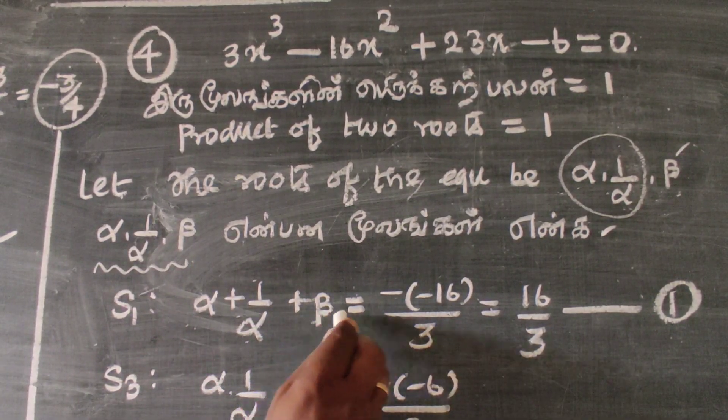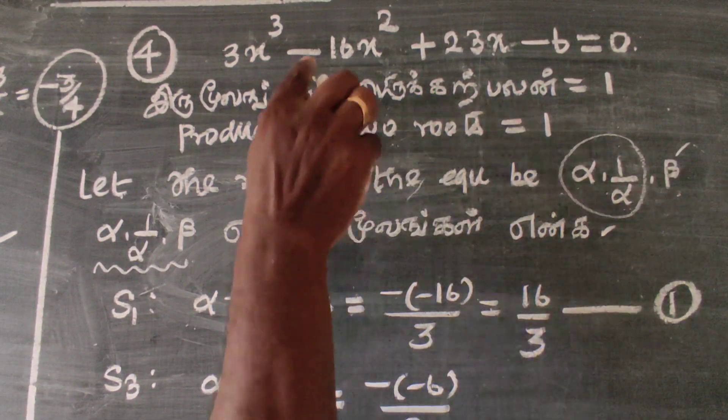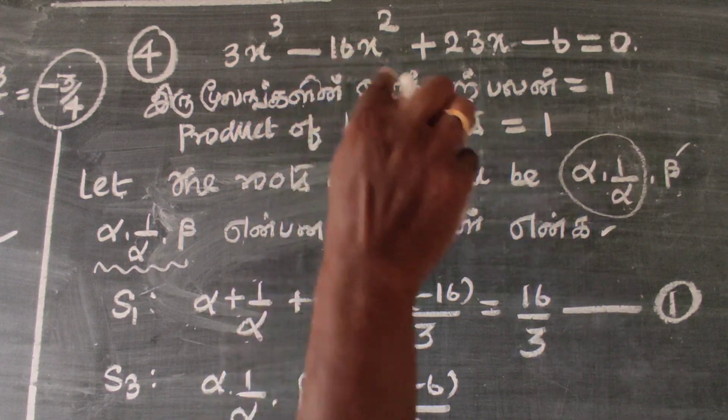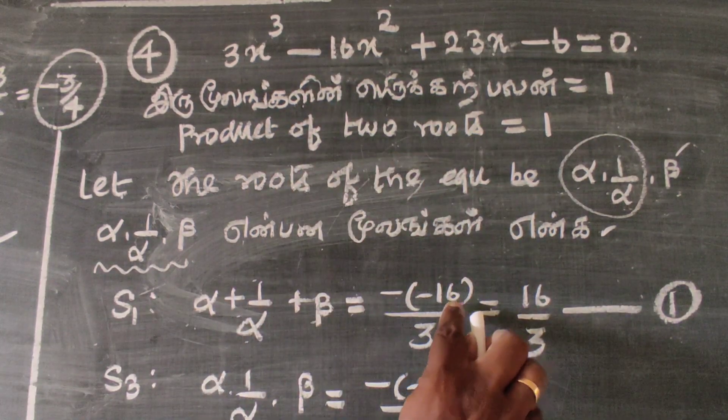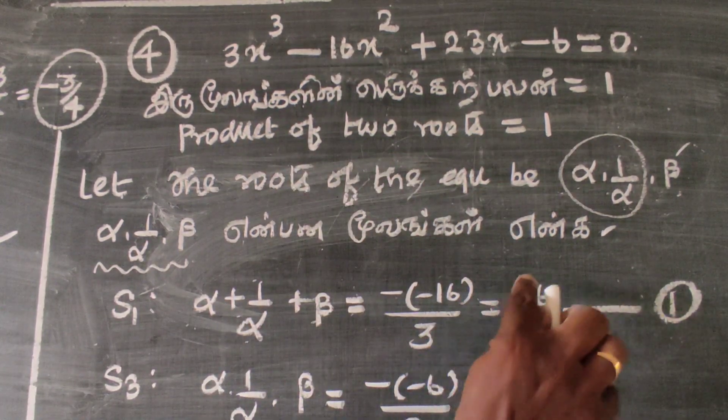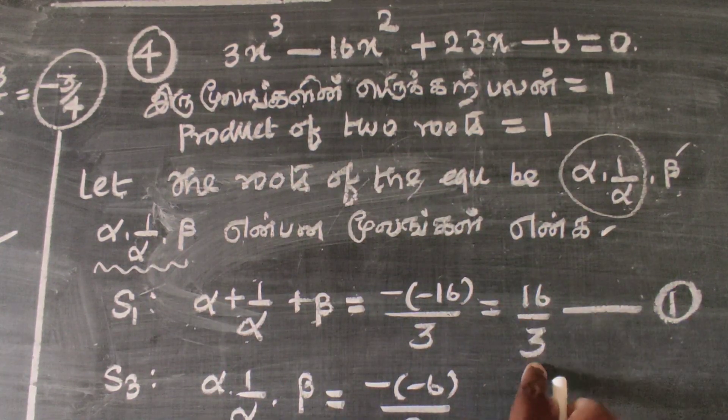Sum of roots: α + 1/α + β is equal to minus b by a, which is minus of minus 16 by 3. This equals 16 by 3.